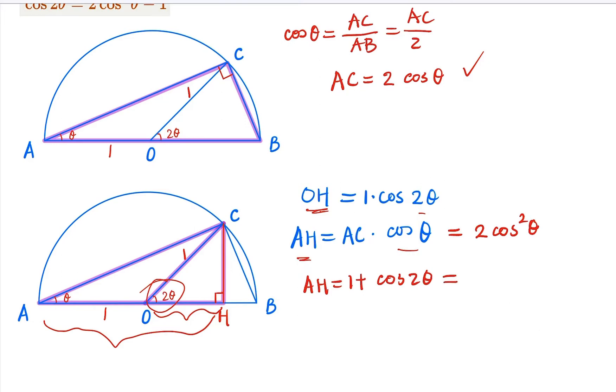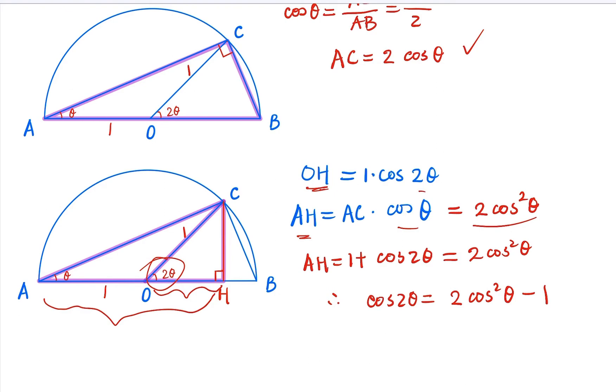What is AH? AH equals 2 cosine squared θ. So we get the double angle formula here: cosine 2θ equals 2 cosine squared θ minus 1, from this geometric construction.